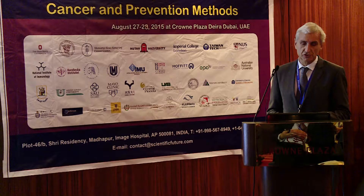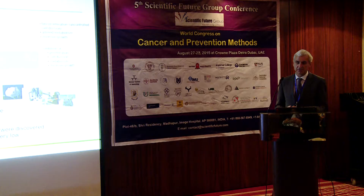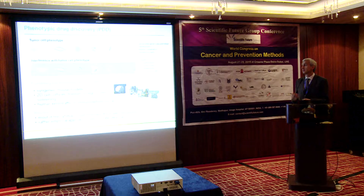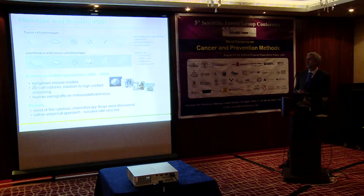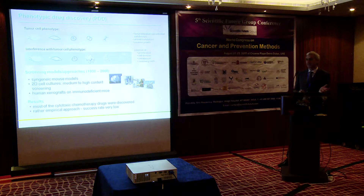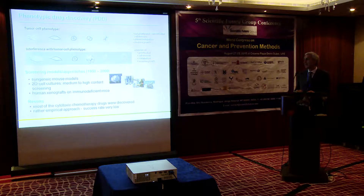In the past, cancer research was really based on phenotypic drug discovery. Tumor cells have certain phenotypes — fast proliferation, invasive growth, and altered metabolism. Starting around 1950, scientists screened compounds which interfere with this phenotype. They began with syngeneic mouse models, then 2D cell cultures were implemented, and later xenografts — transplanting human tumors into immunodeficient mice. This approach was rather empirical and not very successful, but still most currently used chemotherapeutic drugs were discovered this way.